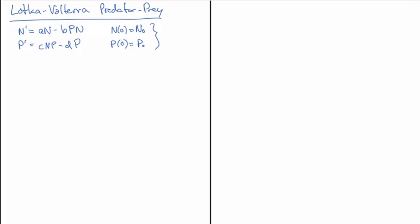Let's start off by writing down just the units on all of these. Keep in mind that n and p have distinct units — I'm going to denote the units of n with square brackets n and the units of p with square brackets p. Because prey and predators do not simply interchange like infected people and susceptible people, we are going to maintain distinct scales for those.